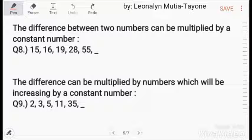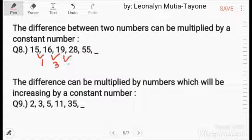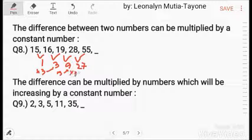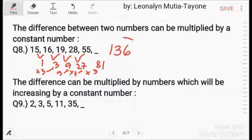The difference between the two numbers can be multiplied by a constant number. So, the difference is 1, 3, 9, 27. So, meaning this is multiplied by 3 equals 3, multiplied by 3 equals 9, 9 times 3 equals 27. So, 27 times 3 and that is 81. So, 55 plus 81, the answer is 136.